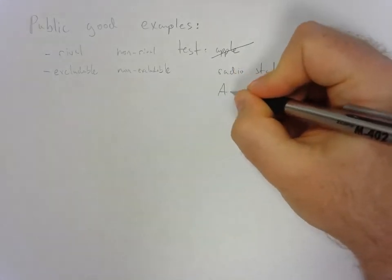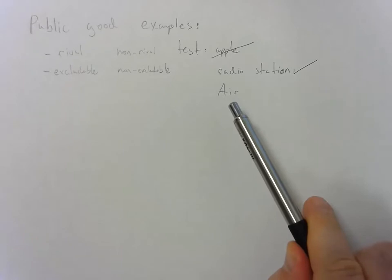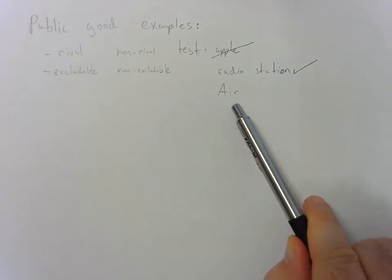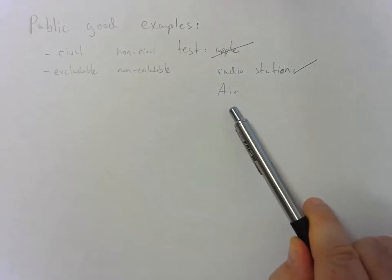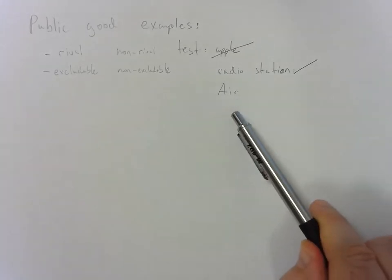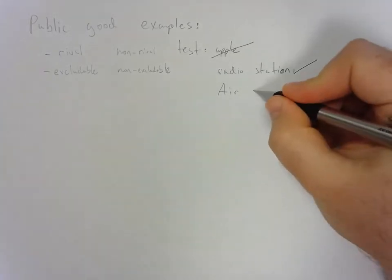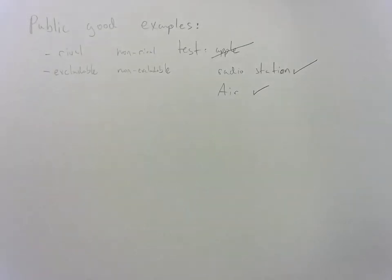So now consider air. Is air rival? When I consume air, does that mean you can't consume air? No, non-rival. Excludable. Can you exclude people from air? Well, unless you push them underwater, the answer is no. So air may be an example of a public good.